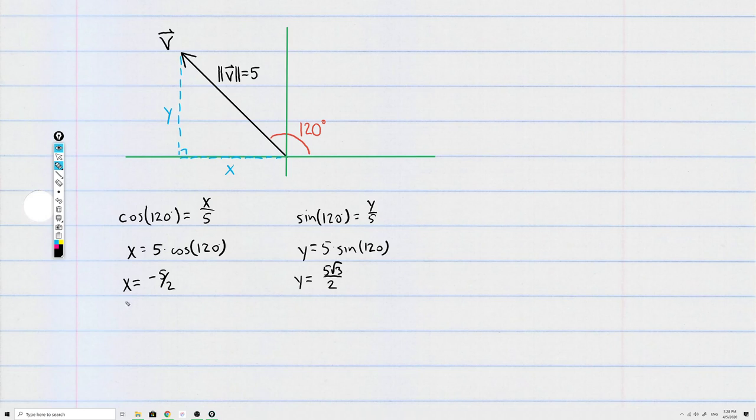Now the shortcut that most books will tell you, which is worth remembering if you're doing any work with vectors, is that the adjacent side, and that's what x is here, is the magnitude of the vector times the cosine of the angle.